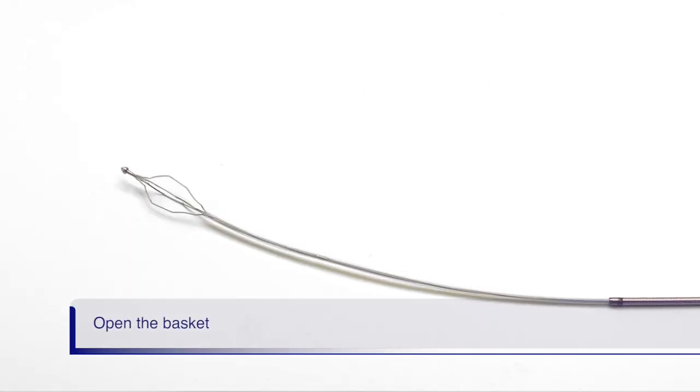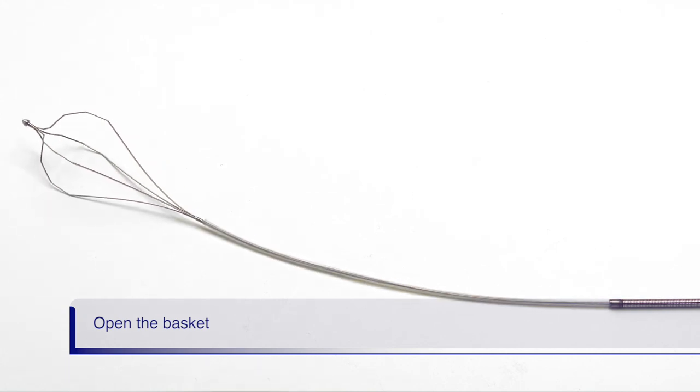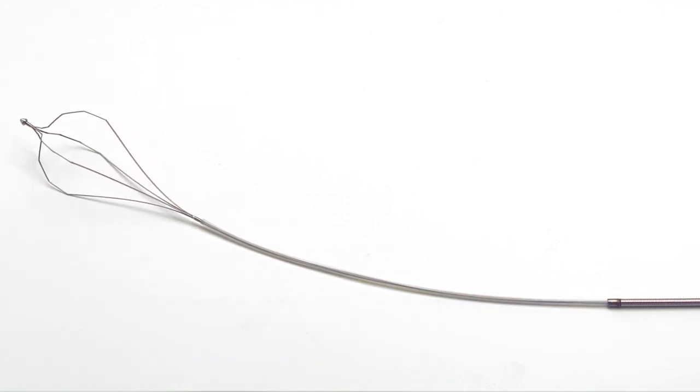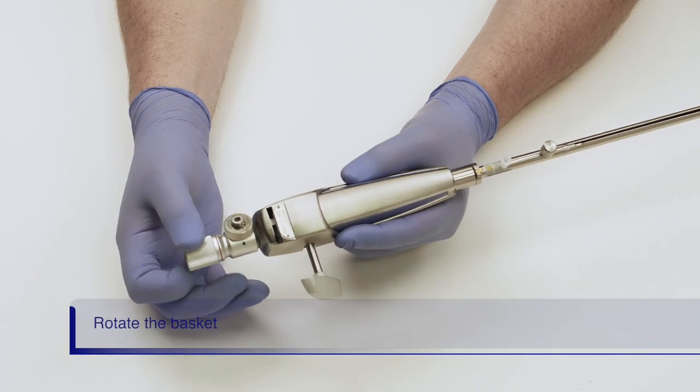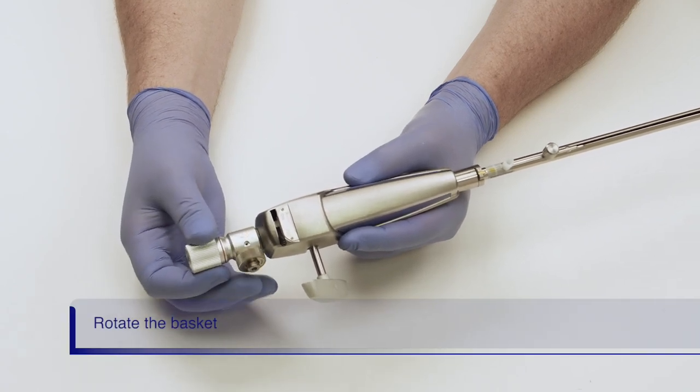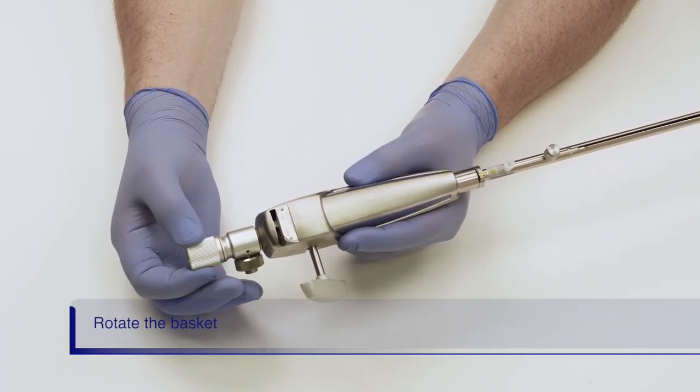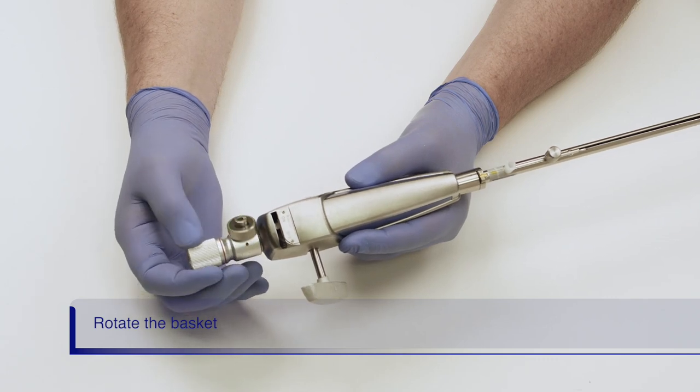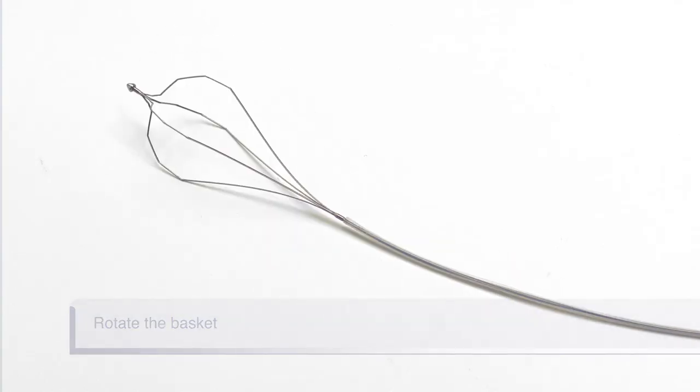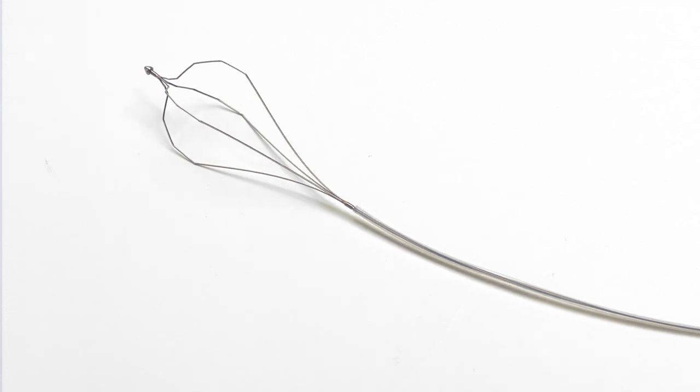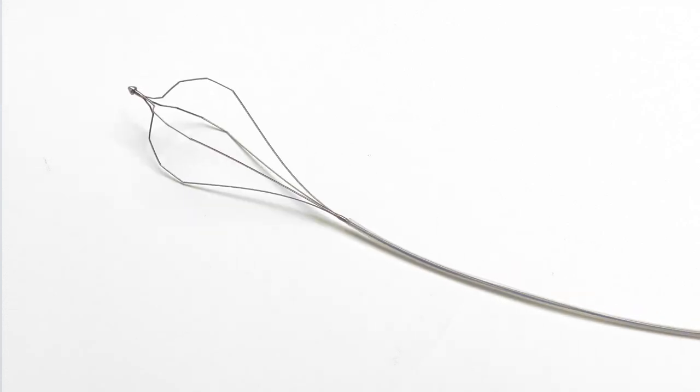Rotating the basket may help to acquire the stone. The basket is rotated by turning the rod on the back of the handle in either counterclockwise or clockwise direction. Once you start rotating the basket, you cannot change direction.